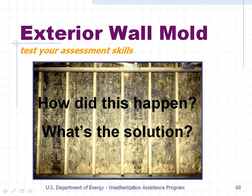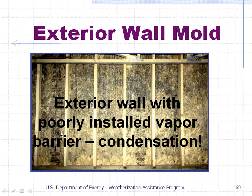Exterior wall mold — let's test your assessment skills. See all of this mold inside these wall cavities? How did this happen, and what's the solution? What happened is there was an exterior wall with a poorly installed vapor barrier, which allowed condensation to form in these wall cavities, thereby allowing mold to grow in there.